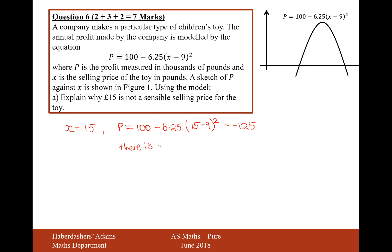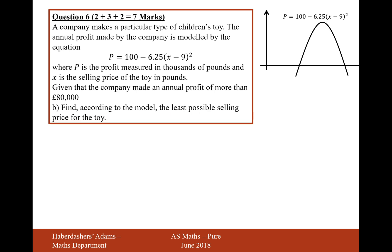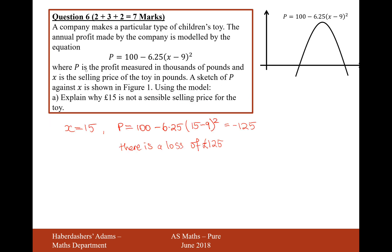So there is a loss of 125 pounds. That would just be too expensive. Not many people would buy the teddy bear or the children's toy. So no, not sensible to sell it at £15. Moving on to part B. Given that the company made an annual profit of more than... Oh, actually, no, sorry. It's profit in thousands of pounds. So it's actually £125,000 they would lose there.